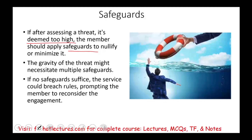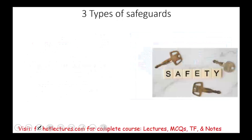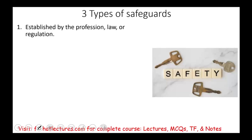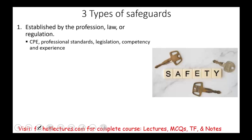If you cannot protect yourself against these threats, you're better off not taking the engagement. There are three types of safeguards. The first one is safeguards established by the profession, law, or regulation — or your own expertise. For example, you take continuous professional education, you rely on professional standards, the law, legislation, your competencies, and experience to defend against those threats.